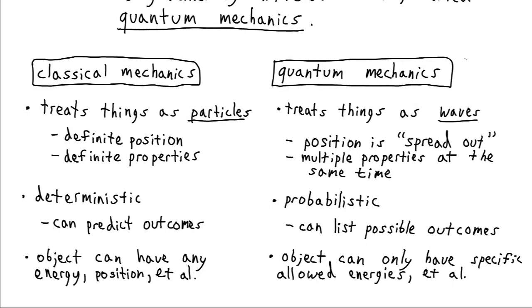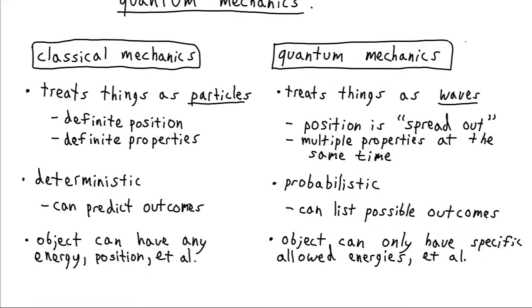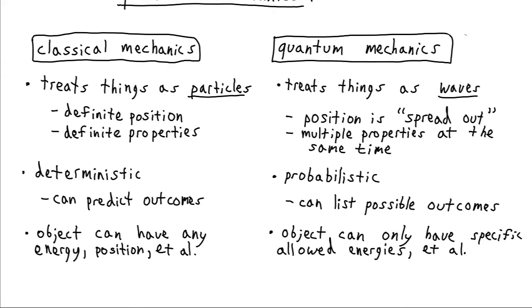According to classical mechanics, our object could have any amount of energy. It could be at any position, etc. But according to quantum mechanics, our object can only have very specific allowed energies and other specific allowed quantities.